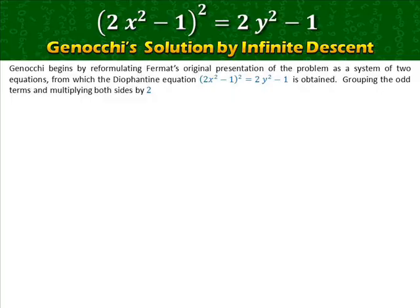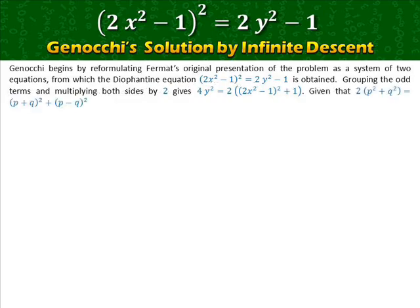Grouping the odd terms and multiplying both sides by two gives: 4y² = 2(2x² − 1)² + 1. Given that 2(p² + q²) = (p + q)² + (p − q)², then 4y² equals the square of (2x²) plus the square of (2x² − 2).